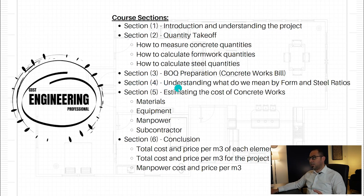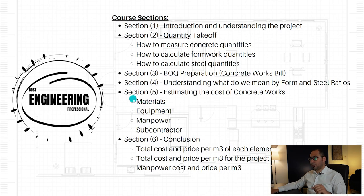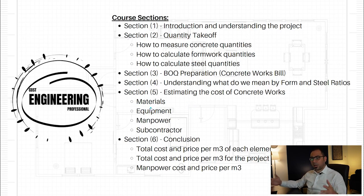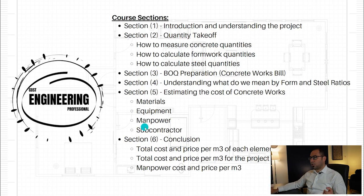In section four we will understand what we mean by form ratio and steel ratio. Then section five will be estimating the cost of concrete works, and this estimation will include the materials required — concrete, steel, and so on — the equipment such as scaffolding if needed, and the manpower required for such work.